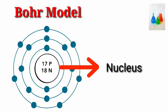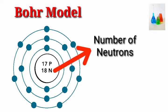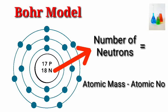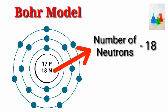Nucleus. Number of protons: 17. Number of neutrons equals atomic mass minus atomic number — 35 minus 17 equals 18. Number of neutrons: 18.